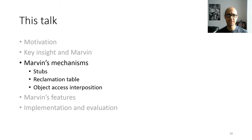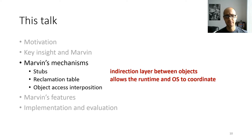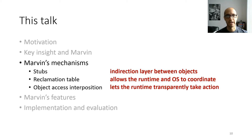Before getting into those high-level features, I want to talk about the low-level mechanisms we use to build them. There are three main low-level mechanisms: stubs, which provide an indirection layer between objects; the reclamation table, which allows the runtime and operating system to coordinate; and object access interposition, which lets the runtime transparently take action when app code runs.